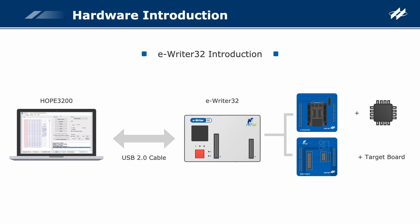In the offline mode, after downloading the programming data to the writer using the Hope3200, the writer will execute the one-key programming operation when the red programming key is pressed.